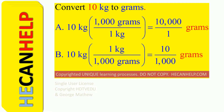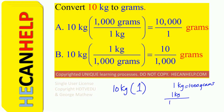So 10 kg is the same as 10 kg times 1. If 1 kg is equal to 1,000 grams, then 1 kg divided by 1,000 grams should equal 1, correct? And that is the same as 1,000 grams over 1 kg. When you multiply by 1, that 1 should be the same as 1 kg divided by 1 kg.